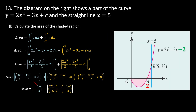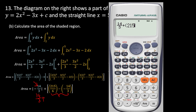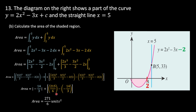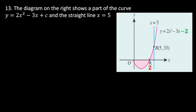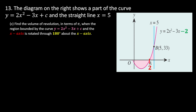The first portion gives a negative value because it is below the x-axis. Since area cannot be negative, we apply a modulus to make it positive. Adding both portions using a calculator gives the total area of 271/6 unit².